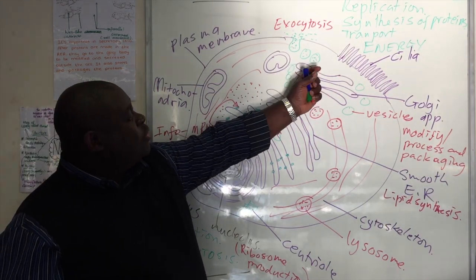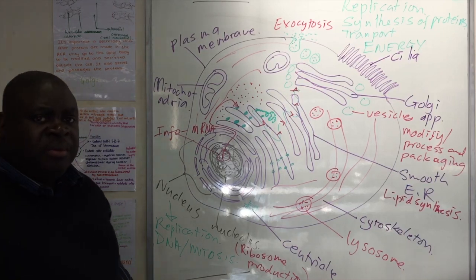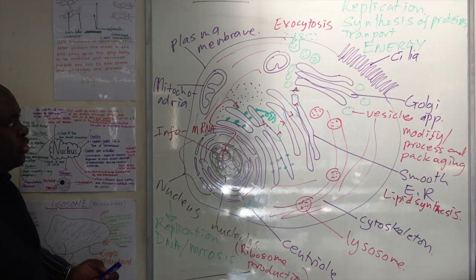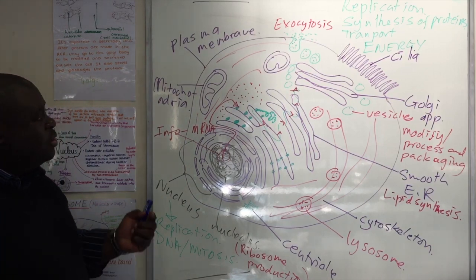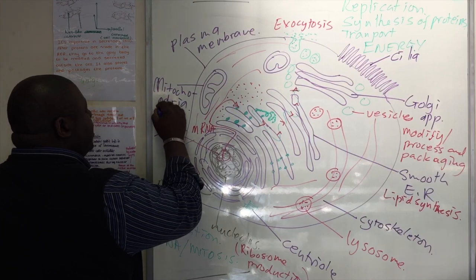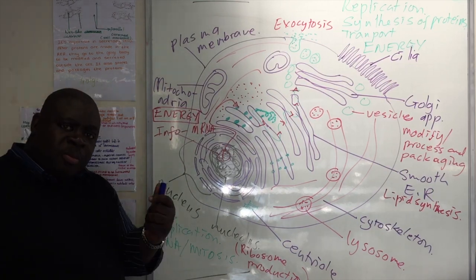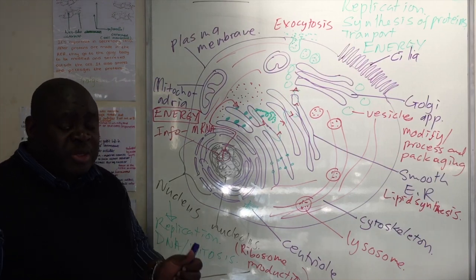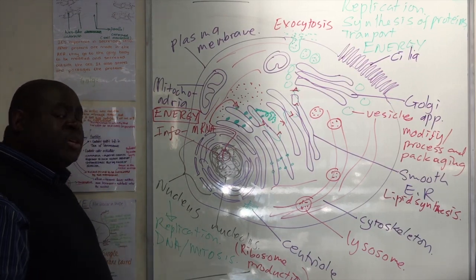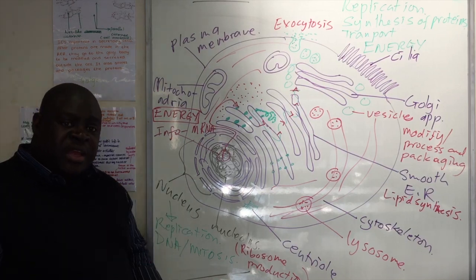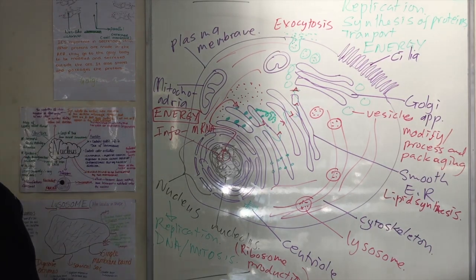Eventually the vesicle that has now been formed is removed by exocytosis from the cell. All these processes of protein synthesis and transport require some form of energy. We can attribute the energy to mainly the mitochondria. Take note: if you say the mitochondria is responsible for respiration, that's not good enough. You must clearly state that it is for aerobic respiration — the process by which energy is generated from the breakdown of organic molecules using oxygen. Oxygen is the key word.